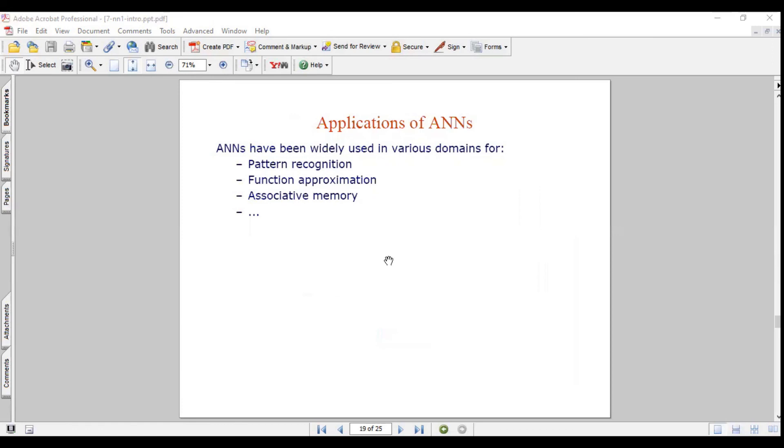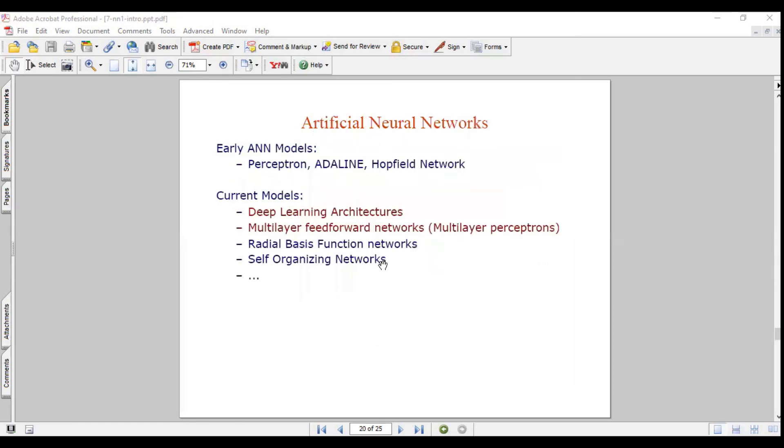Applications of ANNs are pattern recognition, function approximation, as well as associative memory. Early ANN models include perceptron and Hopfield networks. Current models are deep learning architectures, multi-layer feed-forward networks, radial basis function networks, and self-organized networks.